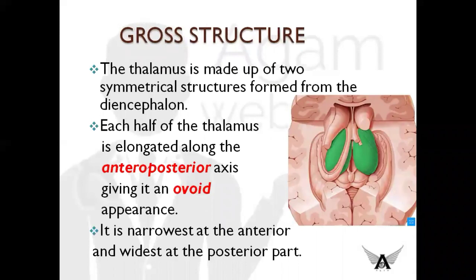Its gross structure: the thalamus is made up of two symmetrical structures formed from the diencephalon, situated on both sides of the cerebral hemisphere. Each half of the thalamus is elongated along the antero-posterior axis, giving it an ovoid appearance. It is narrow at the anterior part and widest at the posterior part, and this expanded posterior part is called the pulvinar. The two thalami are connected to each other by an interthalamic adhesion, which is present on the medial side.